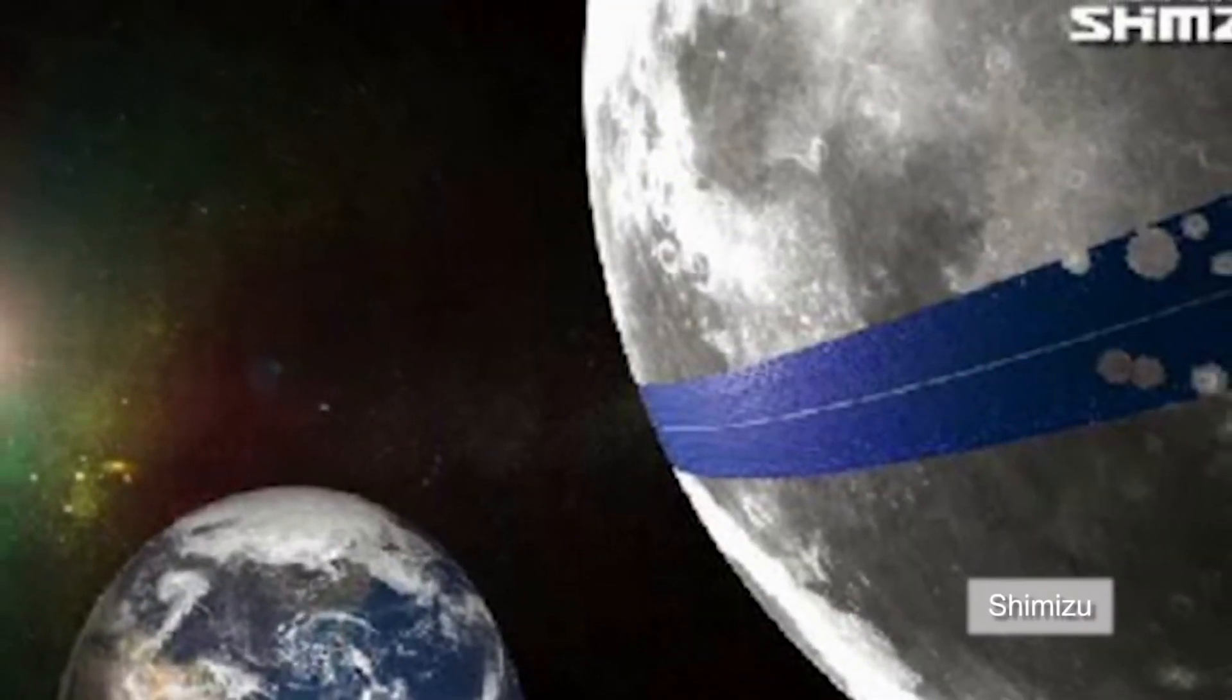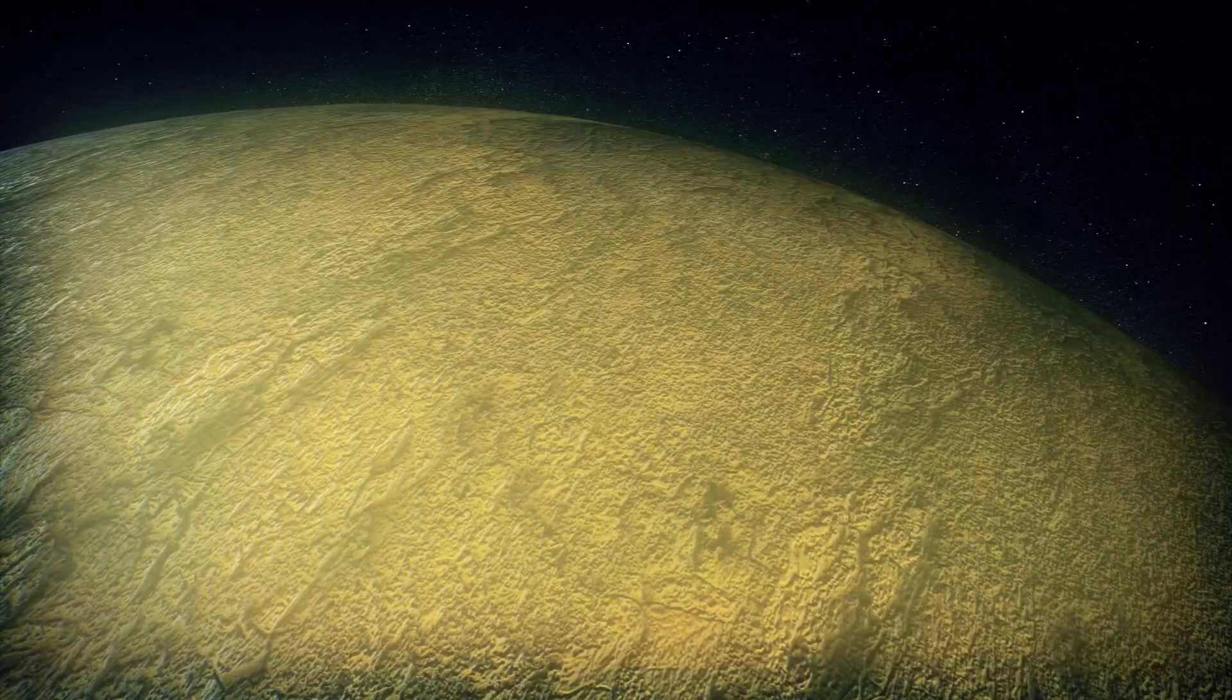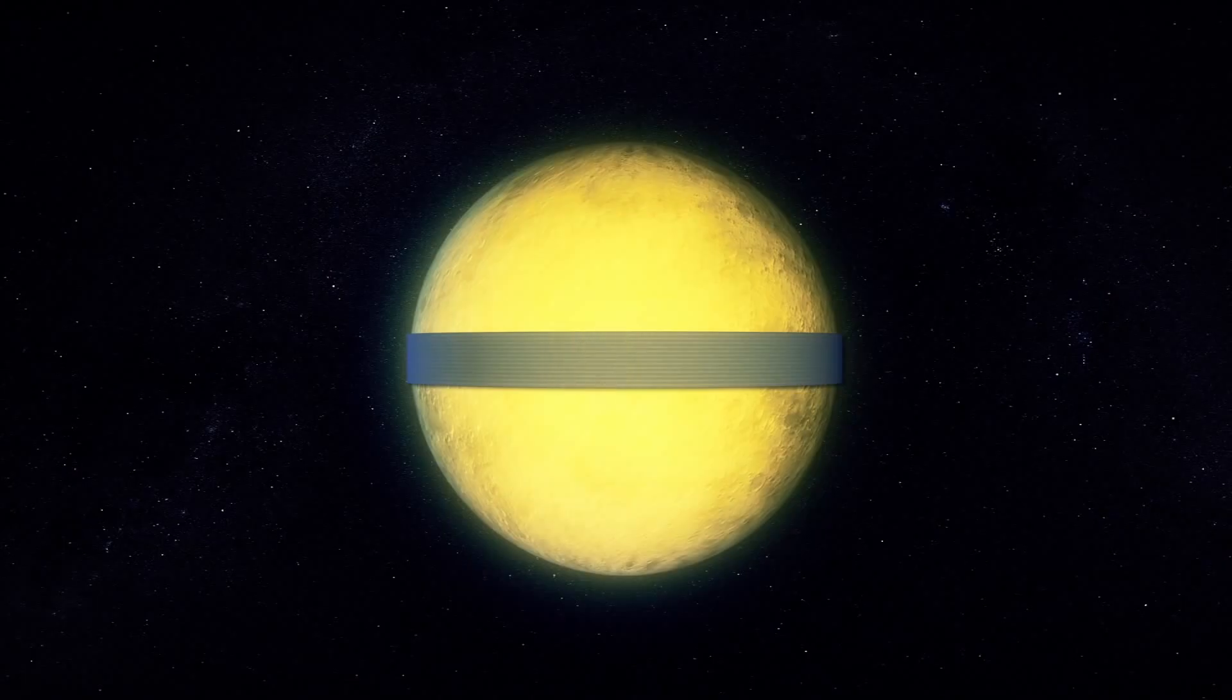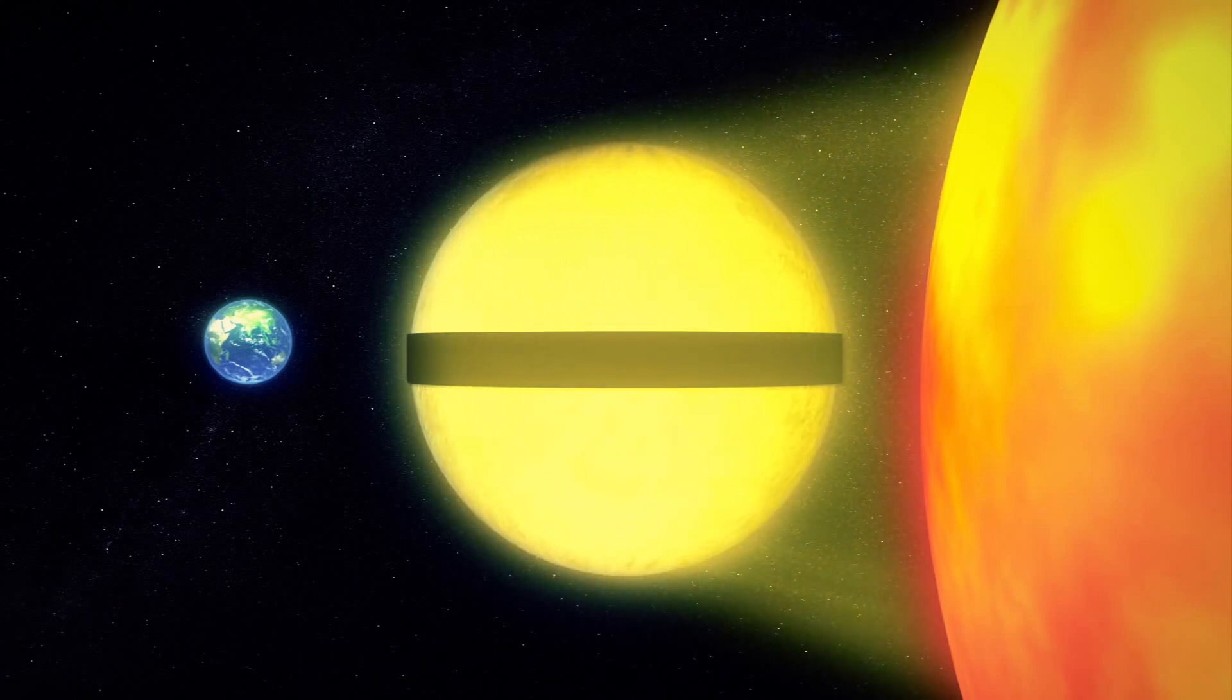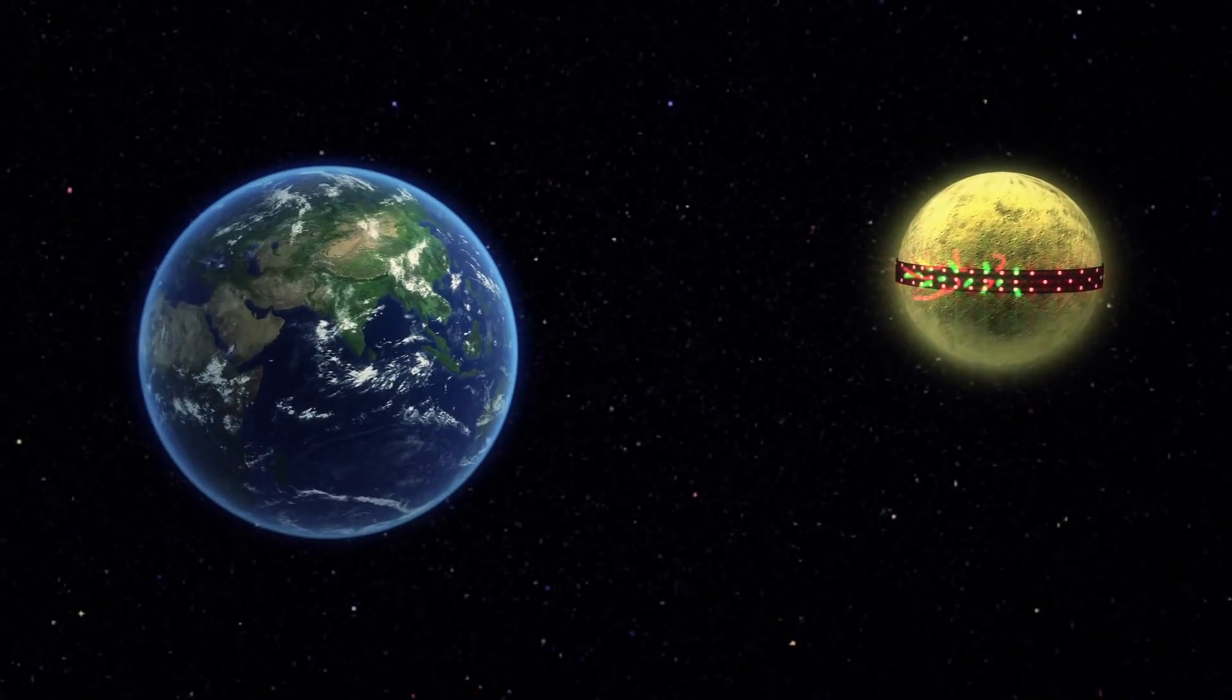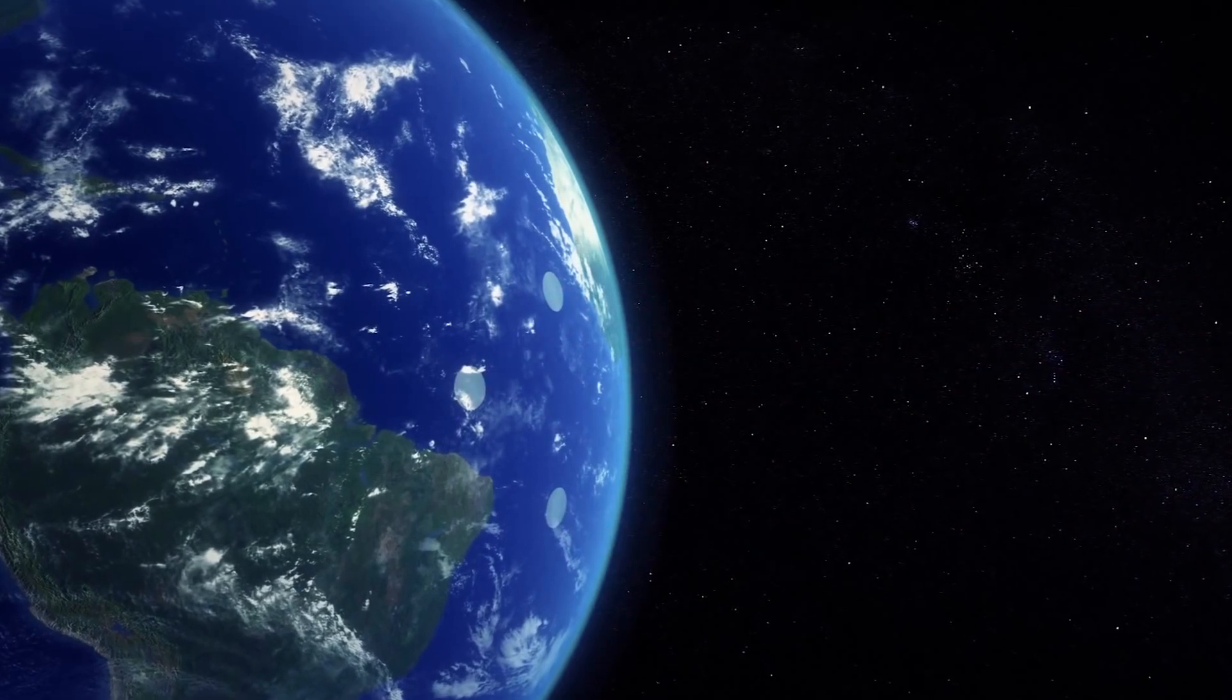A Japanese architecture and engineering firm has a plan to turn the Moon into a giant solar power plant. It proposes building a collection of solar panels, called a lunar ring, 11,000 kilometers long by 19 kilometers wide on the Moon's equator. The belt would receive power directly from the Sun. The solar power would then be beamed to Earth via microwaves and lasers. The company said it could continuously send 13,000 terawatts of power back to Earth at full capacity.